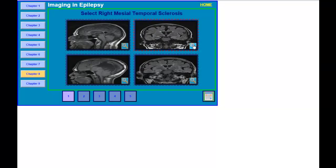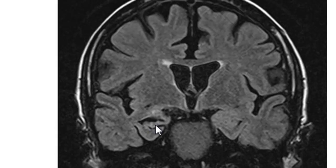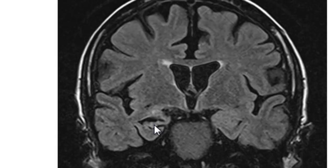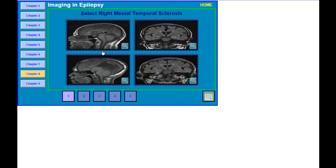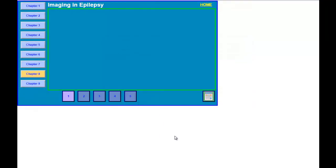Looking at the last image, you are able to identify right mesial temporal lobe sclerosis. The inferior horn of the lateral ventricle is more prominent here. There is a slight increase in signal and, compared to the left side, you can see the hippocampus is smaller. Patients with hippocampal sclerosis can present with spacing out, blanking out, and déjà vu sensation. These seizures typically do not evolve into a secondarily generalized tonic-clonic seizure unless the patient stops their medication. The correct answer is right mesial temporal sclerosis.